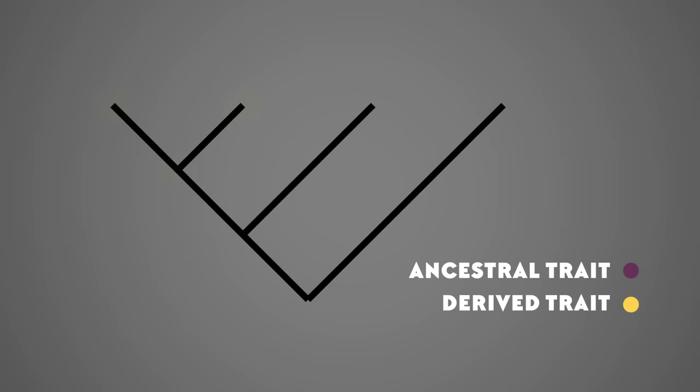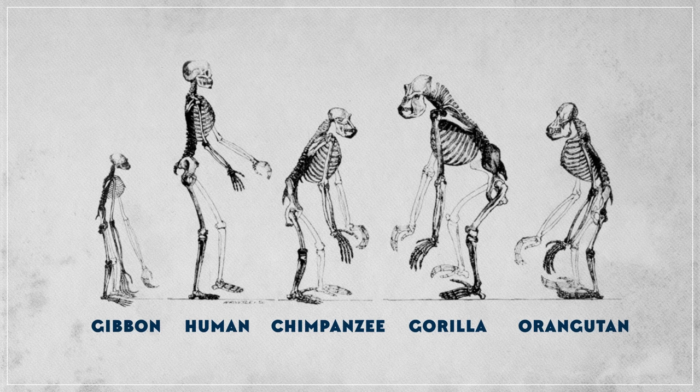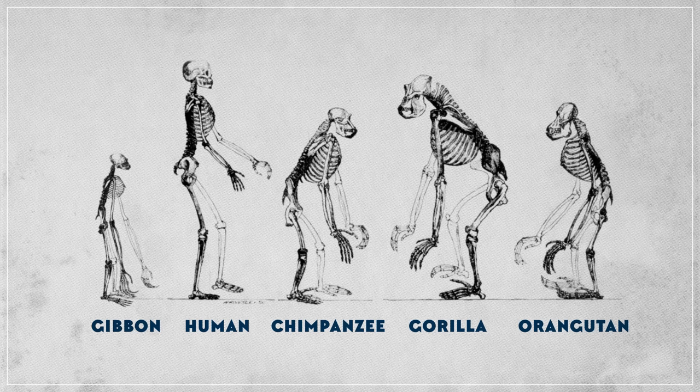Researchers start by finding synapomorphies, traits shared by two or more groups that are inherited from a common ancestor. Groups that are more closely related have more of these synapomorphies in common than more distantly related groups do. And this can be used to organize certain groups together. Thinking about evolution this way emphasizes your unique features as a species, as well as your similarities with other primates.